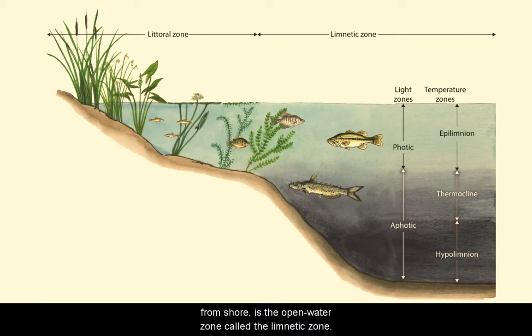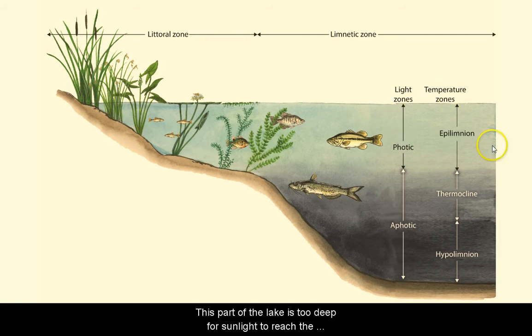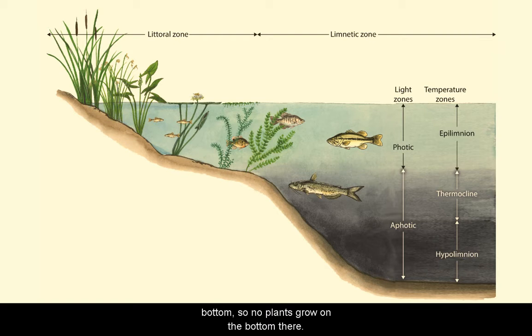Toward the middle of the lake, away from shore, is the open water zone called the limnetic zone. This part of the lake is too deep for sunlight to reach the bottom, so no plants grow on the bottom here.